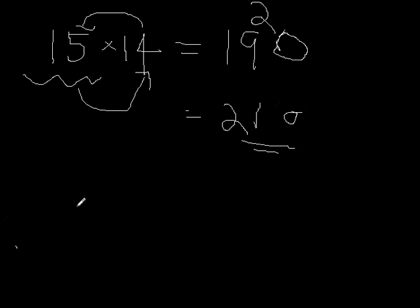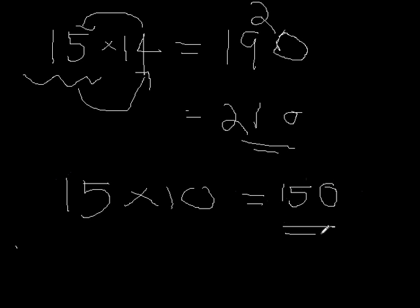If I want to multiply 15 into 10, the answer is 150: 15 plus 0 is 15, and 0 into 5 is 0, giving 150.